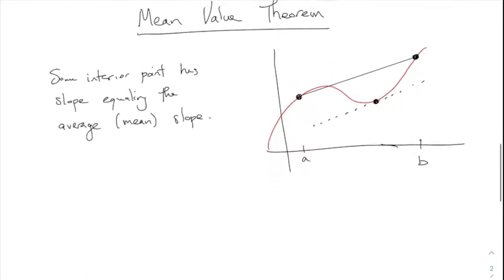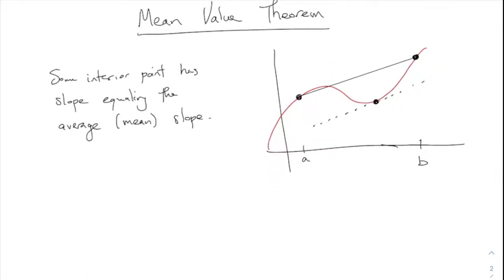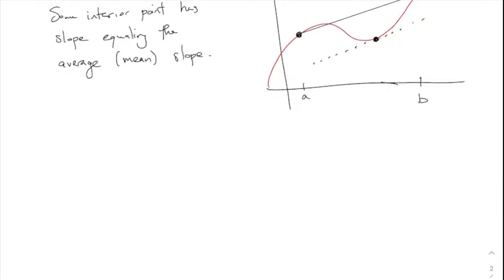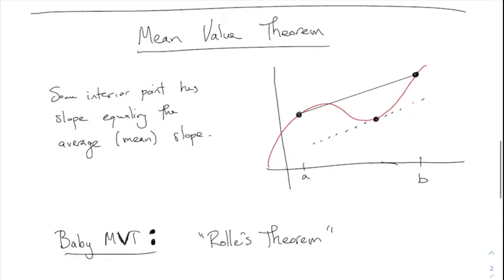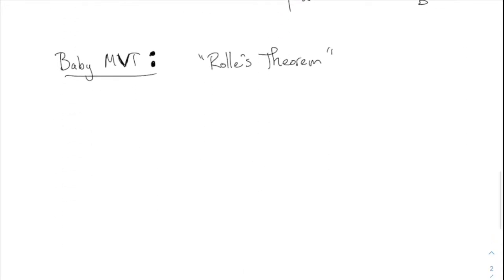The proof of the mean value theorem is kind of messy and uninspiring, but I'd like to talk about a simpler version called Rolle's theorem — a baby mean value theorem. Once you prove this one, the full mean value theorem is not much more interesting or difficult. So I want to focus on this MVT simplified form. This is called Rolle's theorem.